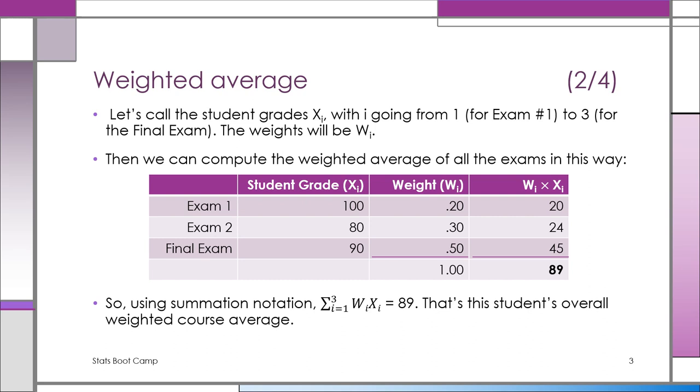Notice, if you use the symbols, it's the sum of the WI, XI. WI represents the weights. And notice the average again is 89. You'll see it's not the same as a simple average.